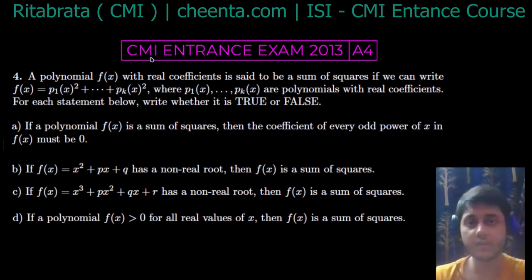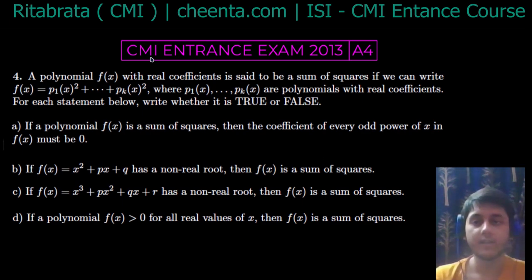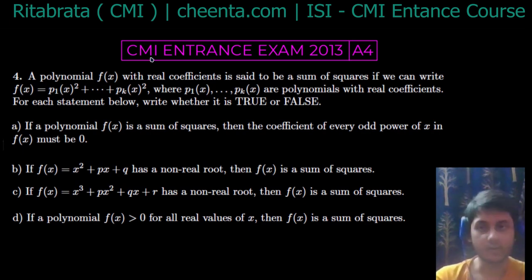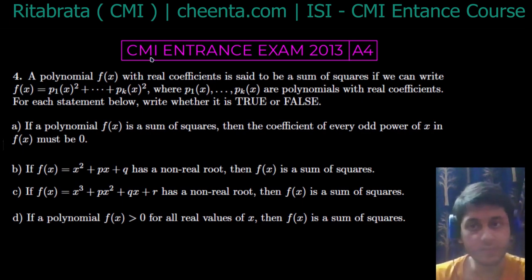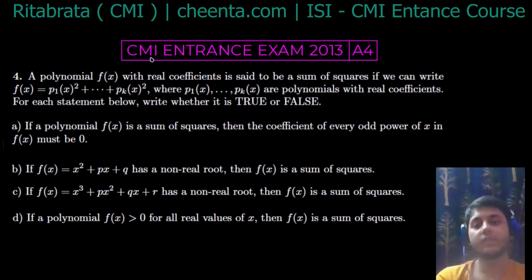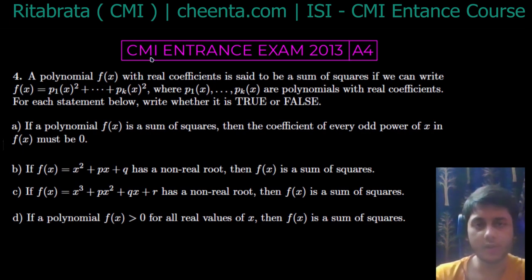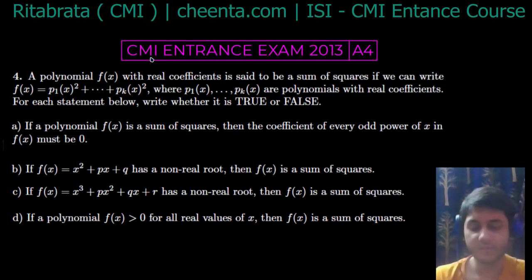A polynomial f(x) with real coefficients is said to be a sum of squares if we can write f(x) equal to p₁(x)² + ... + pₖ(x)², where p₁ up to pₖ are polynomials with real coefficients. We need to check four statements: (a) whether the coefficient of every odd power of x in f must be 0; (b) whether a quadratic f(x) = x² + px + q with non-real roots is a sum of squares; (c) whether a monic cubic polynomial with a non-real root is a sum of squares; (d) whether f(x) > 0 for all real x implies f is a sum of squares.